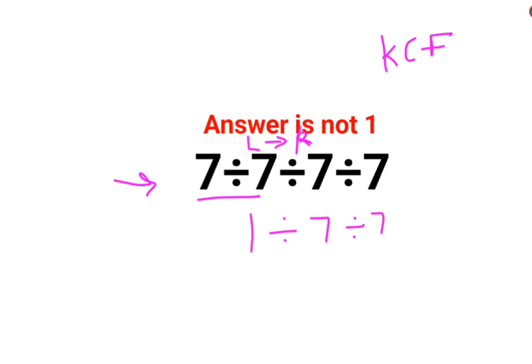C stands for changing the division sign to multiplication, and F stands for flipping or taking the reciprocal of 7, which is 1 upon 7. Similarly, we have another division sign which gets changed to multiplication and the reciprocal of 7, which is 1 upon 7. So the answer is 1 times 1 upon 7 times 1 upon 7, which equals 1 upon 49.